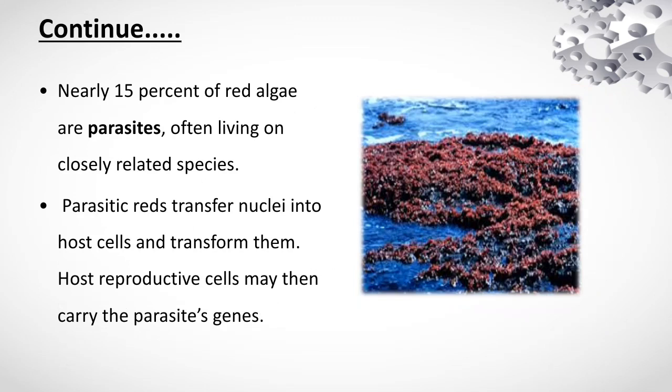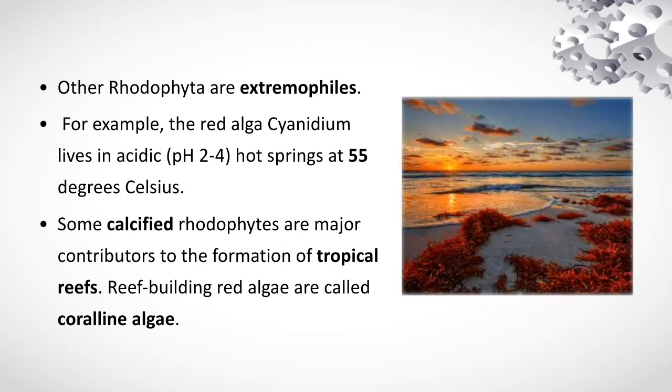Parasitic red algae transfer nuclei into host cells, and the host reproductive cells may then carry the parasite genes. Other rhodophyta are extremophiles — for example, some red algae live in acidic environments and hot springs at 55 degrees Celsius. Some calcified rhodophytes are major contributors to the formation of tropical reefs; reef-building red algae are called coralline algae.